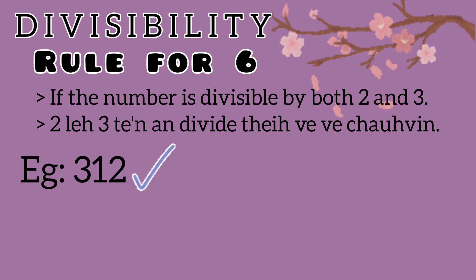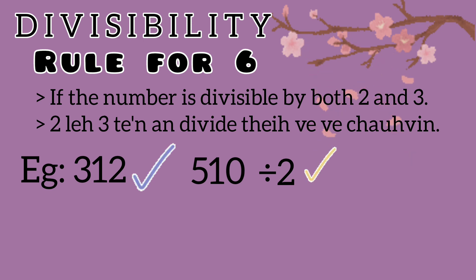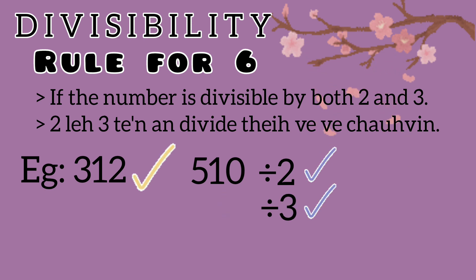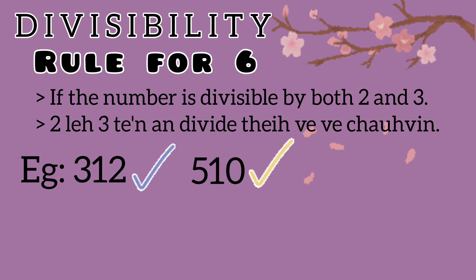Example: we have 510. We have an even number — we have the criteria. So 5 plus 1 plus 0 equals 6, and 6 is divisible by 3. So 510 is divisible by 6.